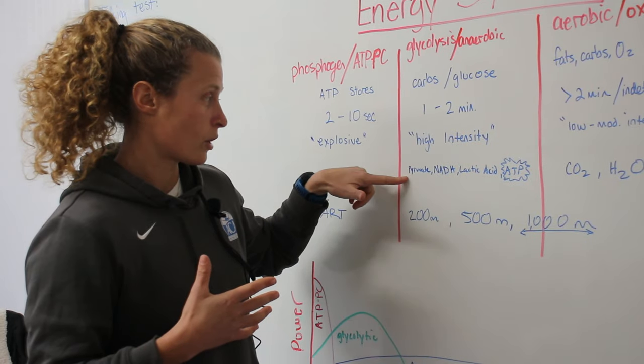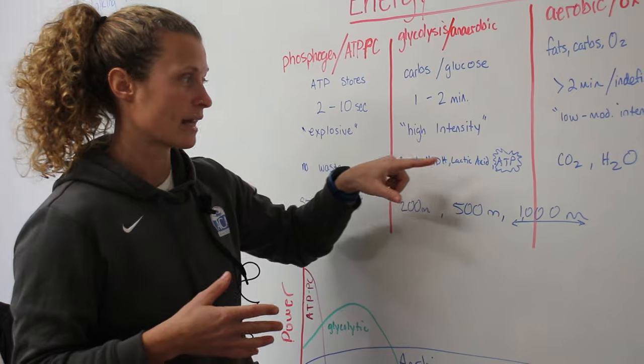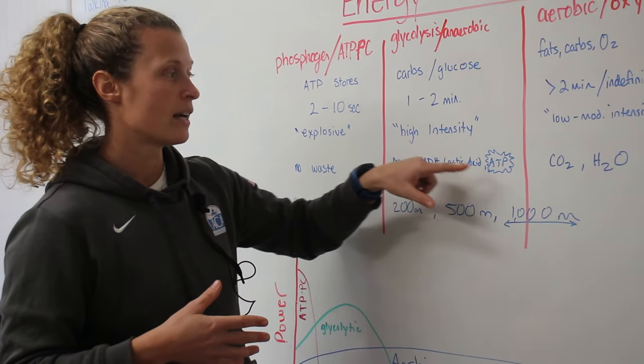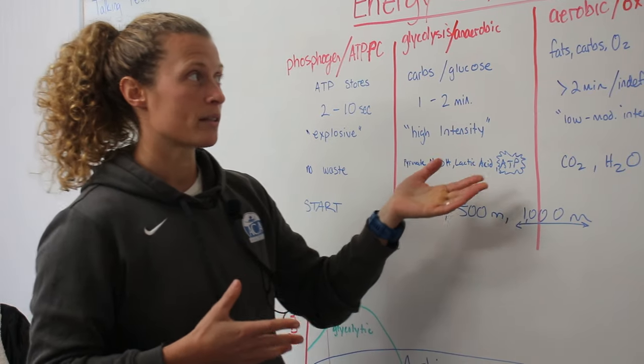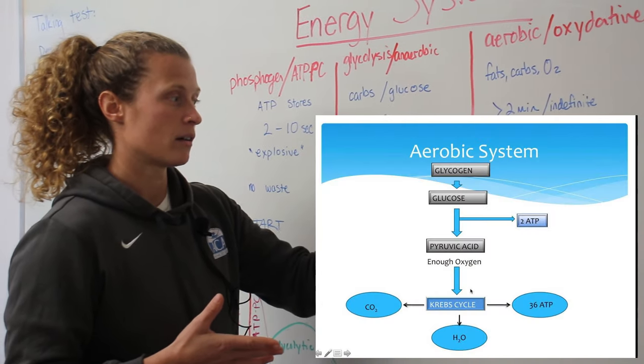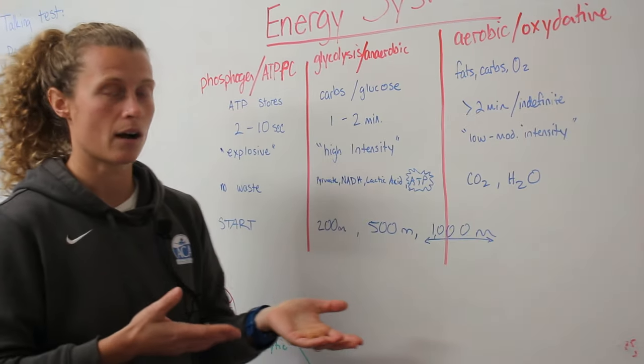And so you're going to be creating pyruvate, this thing called NADH, lactic acid, which we all know about, but you're also creating ATP. And with the aerobic system, the byproducts are only CO2 and H2O, so you're going to pee it out or you're going to breathe it out.